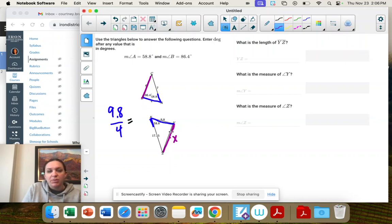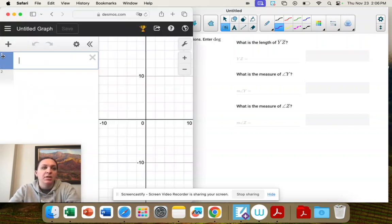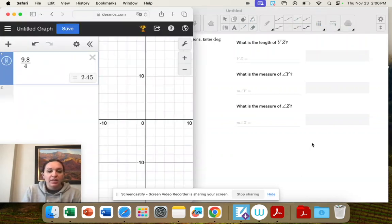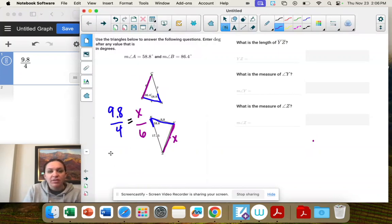So 6 is the one that actually goes with x. And we got to make sure we go in the right order. So we're going to put x on the top. I'm just going to take 9.8 divided by 4. I get 2.45.